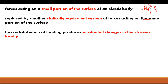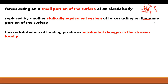The redistribution of loading produces substantial changes in the stresses locally. What that means is that the stresses produced locally are substantially changed. This is pretty intuitive: having a load concentrated in one spot creates a stress concentration there, versus dividing that load in half and placing it in two different spots, which produces a completely different profile of stresses on that elastic body. You can think of it as pulling on something stretching — holding it in one spot versus another, you'd expect the stresses to look different.